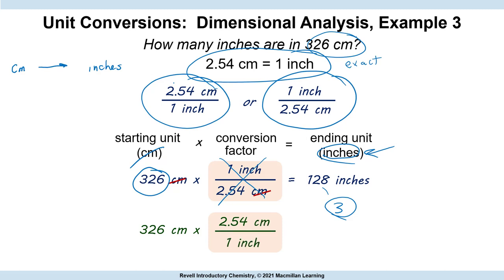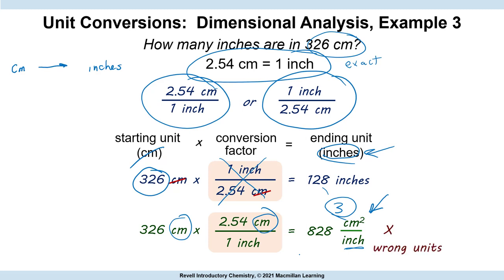What would happen if we chose the wrong conversion factor? You should look at the units and realize those aren't the units you want and that you've made a mistake. If you do this wrong, you get 326 times 2.54 equals 828, but the unit is centimeters squared per inch — not inches. That doesn't make sense. Always double-check to make sure your answer makes sense.